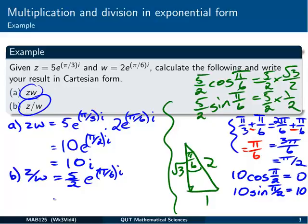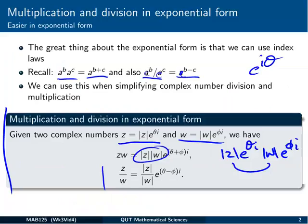Coming back to writing our answer, we're going to have 5√3/4 plus 5/4 times i. So that's our Cartesian form for the quotient z/w, or the division of z and w if you want. So that's how we use our new rules for multiplying and dividing exponential form complex numbers.